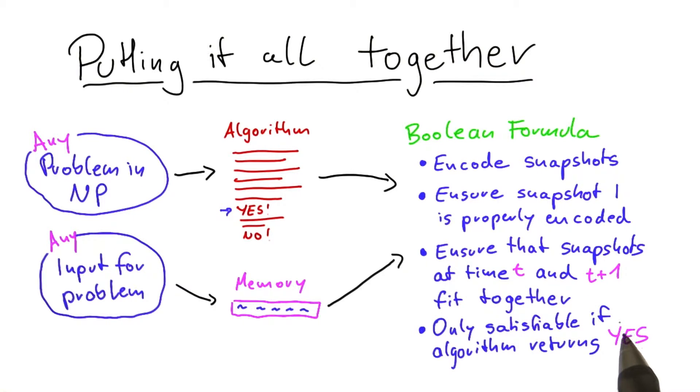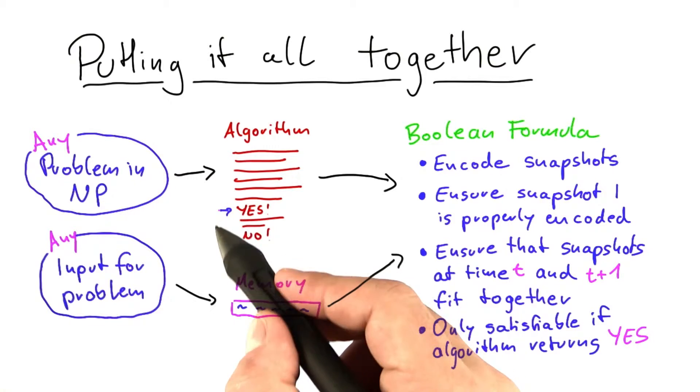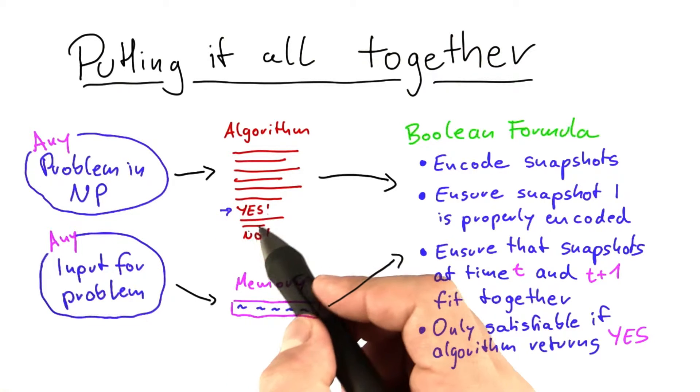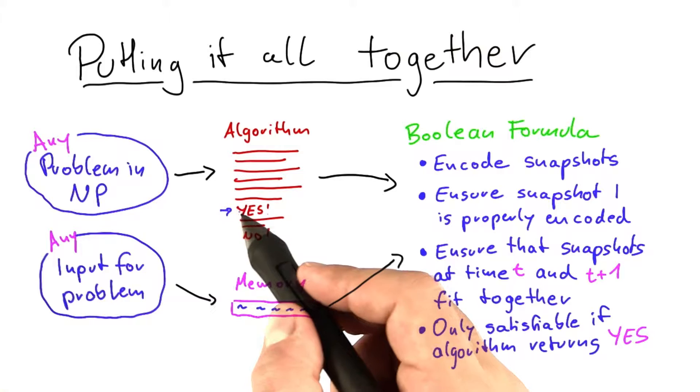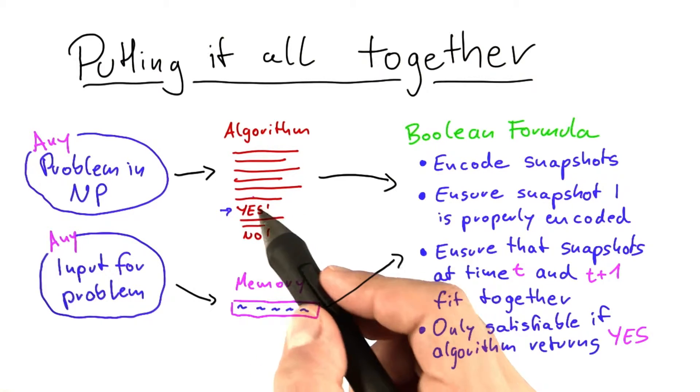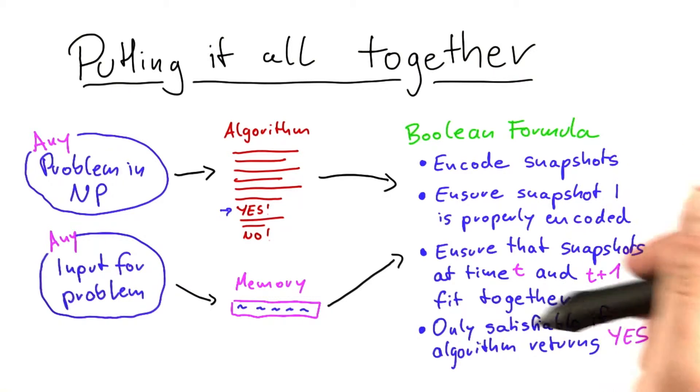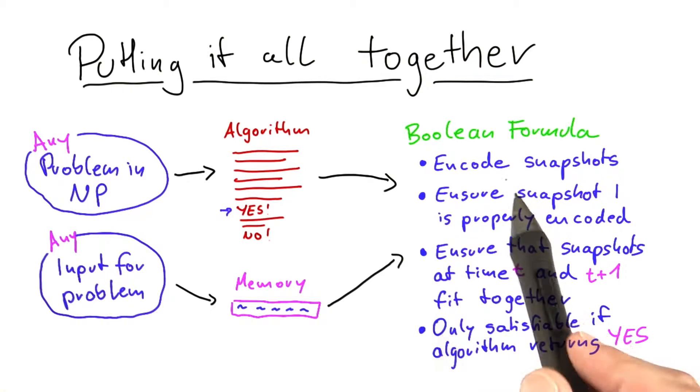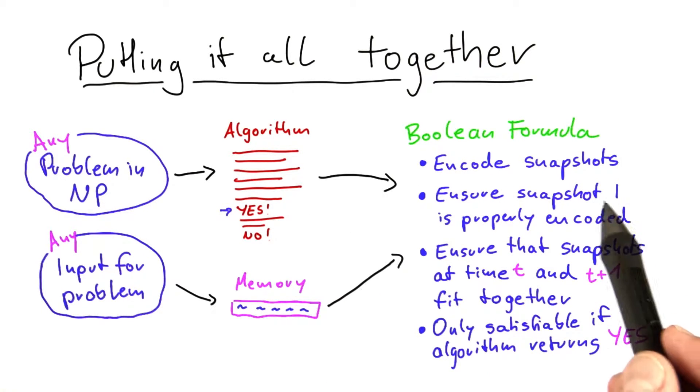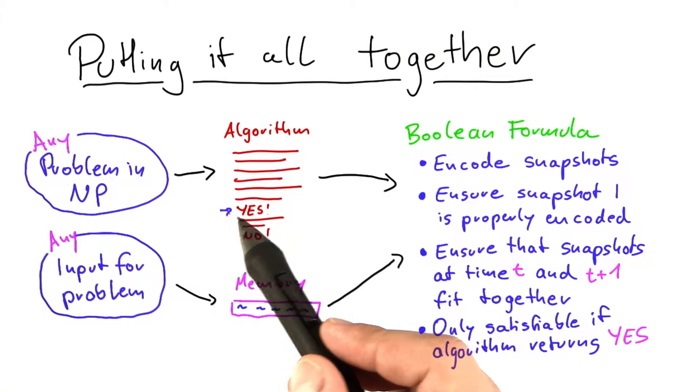And this is actually quite easy to ensure because once the algorithm reaches this line of the code, wherever it may be, and you can even have multiple lines where the algorithm returns yes, but once such a line has been reached, the algorithm returns yes and stops. So this here is very easy to ensure. You just have to make sure that there's one snapshot where the algorithm is in a line that returns a yes.